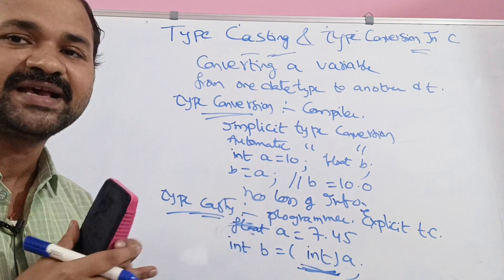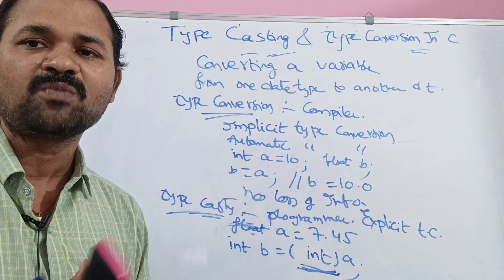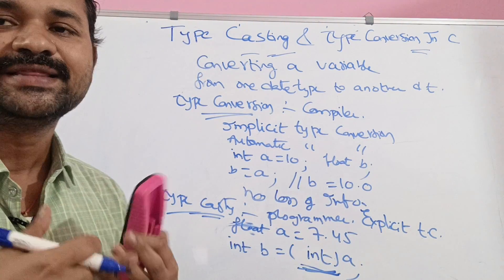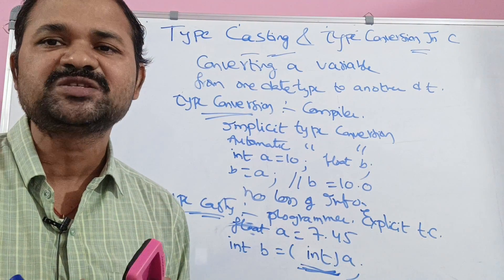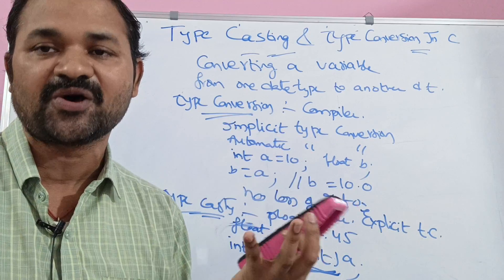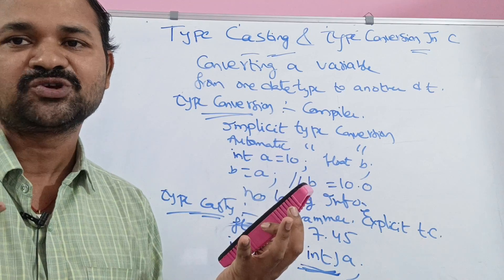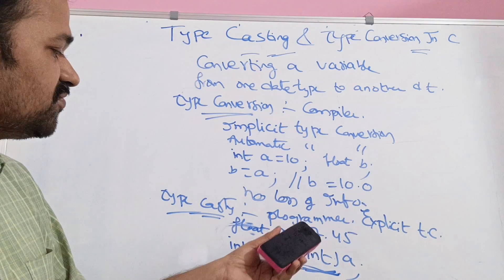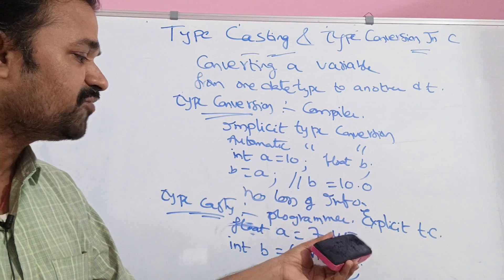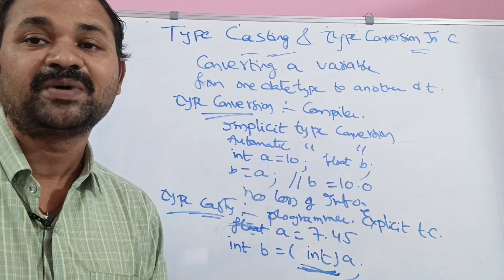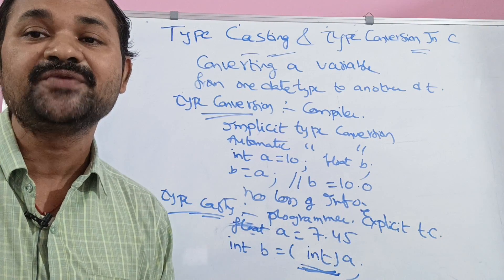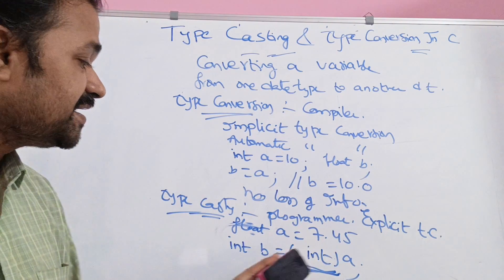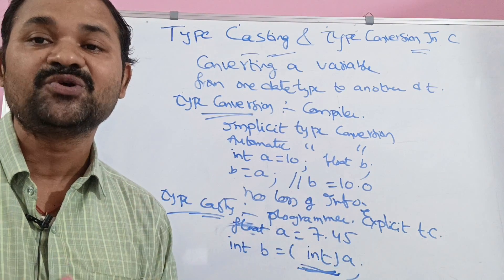While doing type casting, there may be a possibility that information is lost. The value of a is 7.45, but 0.45 is lost — b contains only 7.